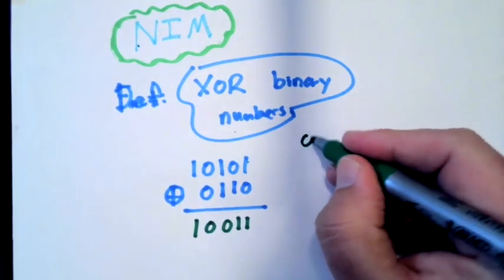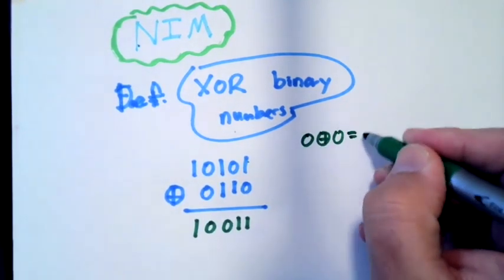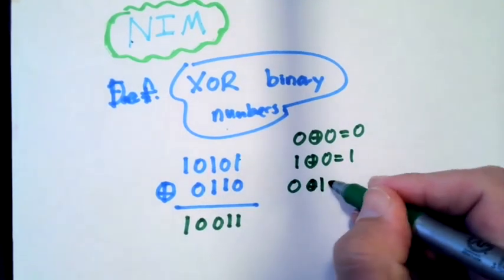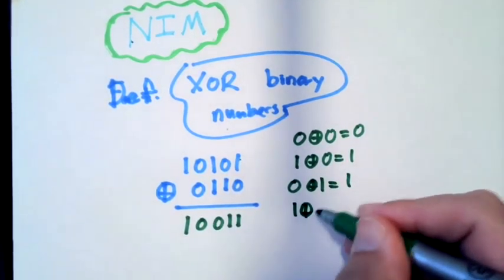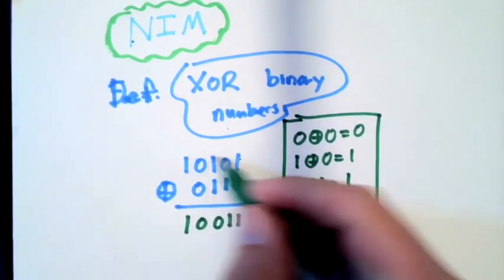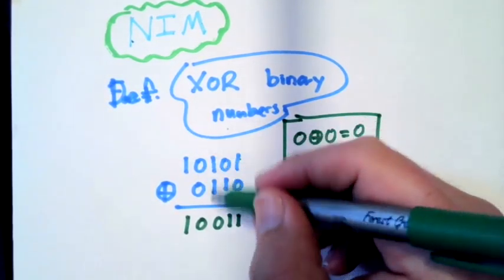We're going to start with the rule that zero XOR zero equals zero, one XOR zero equals one, zero XOR one equals one, and one XOR one equals zero. This is our basic setup. And then when you want to do it for a longer string, you just do it column by column.